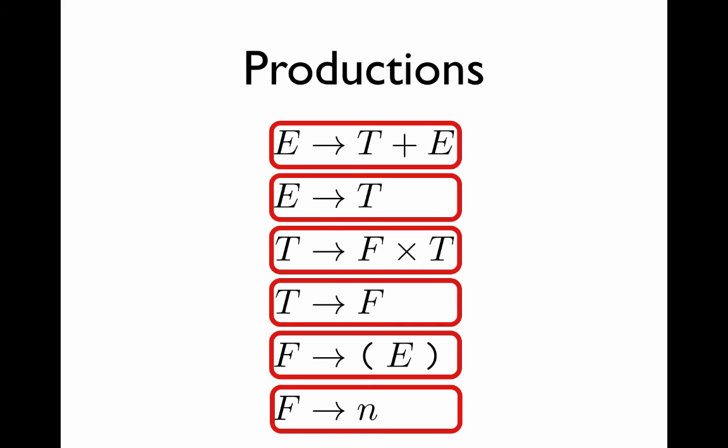Every rule is itself an individual production. For example, the first rule says that an expression may be a term plus an expression. The second rule says that an expression may be a term. The third rule says that a term may be a factor times a term.